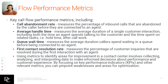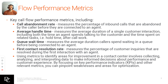Queue wait time obviously does exactly what it says — it measures the average duration a caller spends waiting in a queue before being connected to an agent. This gives you a really good idea if, say, wait times are 15 minutes and your KPI is 30 or 60 seconds, maybe we need to add more agents, or maybe we need to offer a callback so they're not on hold but the callback holds their place for them.